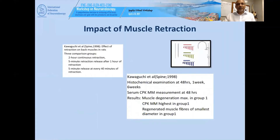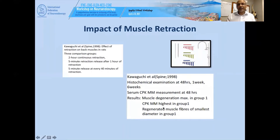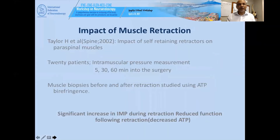How do we know about the impact of muscle retraction? A study by Kawaguchi in 1998 divided rats into three groups: retractors applied continuously for two hours, a five-minute retraction release after one hour, and a five-minute release after every 14 minutes of retraction. Histologic examination and CPK-MM measurements at 48 hours showed that CPK-MM was highest in group one with continuous retraction, and regenerative muscle fibers were smallest in that group as well.